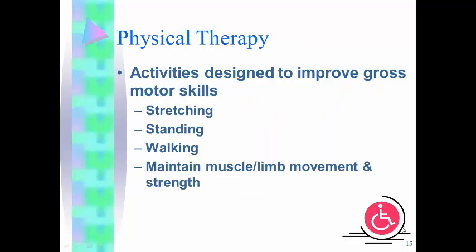Physical therapists work with gross motor skills — arms, legs, big movements. They help the child do exercises related to stretching. If a child has something like cerebral palsy, they really need to be stretched out so those muscles won't draw up. They also help with standing, walking, keeping balance, and walking on a low balance beam. These exercises help the child be able to walk.